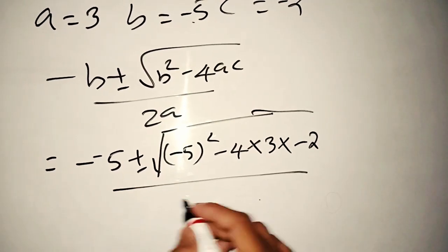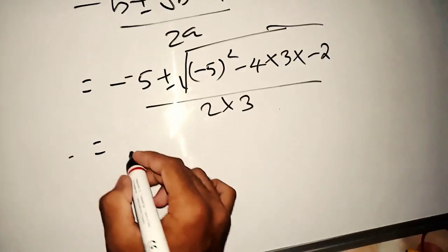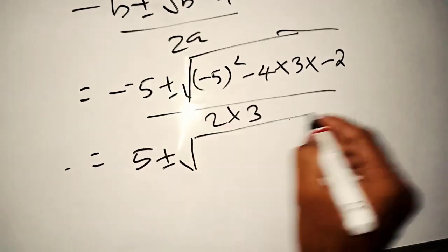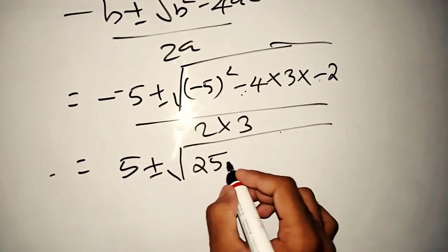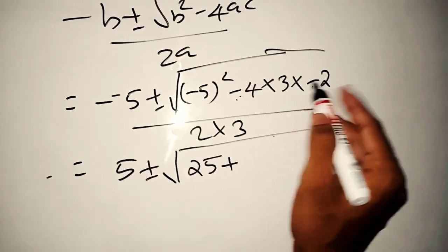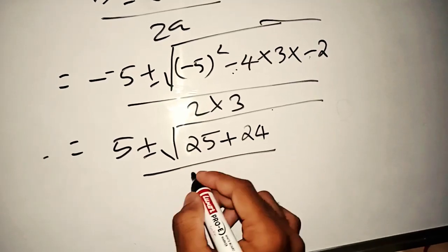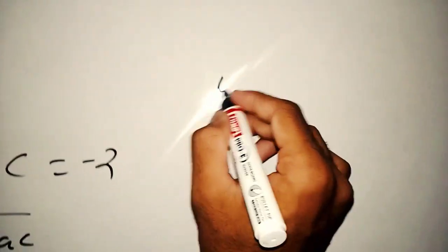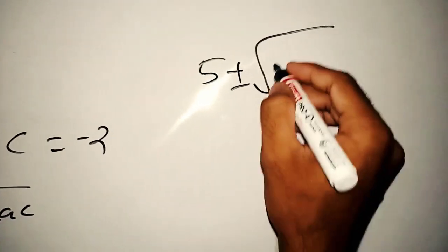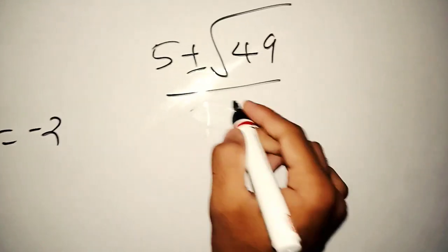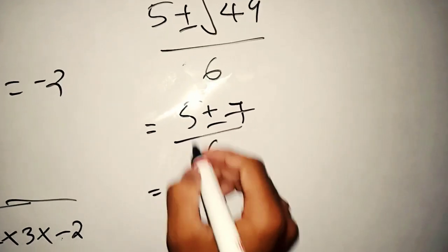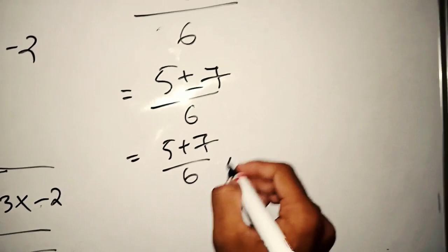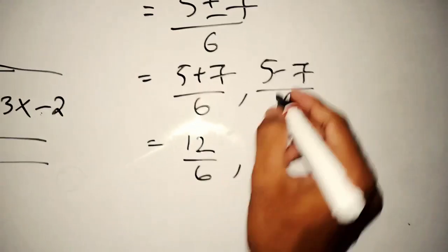We have to add a step: 2 x 3. 2 minus 2 is plus 5, plus or minus 1. Minus 5 is 25. We have to add 2 minus 2, minus is plus. We have to add minus 4 x 3 is 12. We have to add: 5 plus or minus root of 25 plus 24 equals 49, by 2 x 3 is 6. The answer is 5 plus or minus root 49 by 6. That is, 5 plus 7 by 6, or 5 minus 7 by 6. So 5 plus 7 is 12 by 6, and 5 minus 7 is minus 2 by 6.